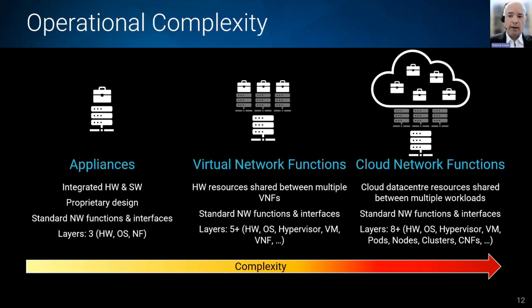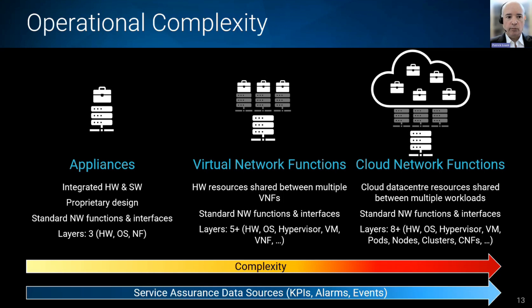We no longer had a single box deployed in the network delivering services — we had virtual infrastructure hosting multiple virtualized network functions, so more layers to worry about when understanding performance and problems. With cloud network functions, we now have additional layers of complexity: pods, nodes and clusters, as well as virtualization layers of hypervisors and so on. From a service assurance perspective, we now have many more data sources, more places generating data that tell us about service performance, network performance, and root cause of service problems.